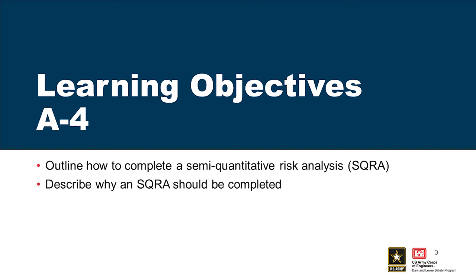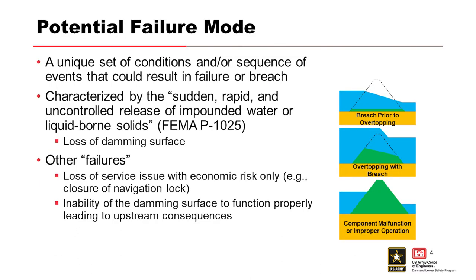We have different levels of risk analysis in the Corps and in Reclamation, and we use those at different levels. A potential failure mode is defined as a unique set of conditions and/or sequence of events that could result in the failure or breach. FEMA guidance categorizes failure as the sudden, rapid, and uncontrolled release of impounded water or liquid-borne solids. It's recognized that there are lesser degrees of failure — any malfunction or abnormality outside the design assumptions that adversely affects a dam's primary function is properly considered as a failure.